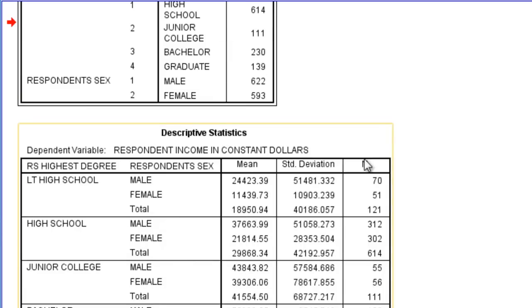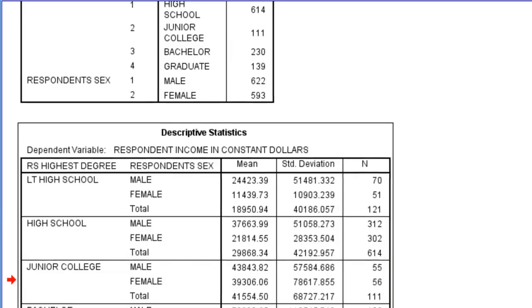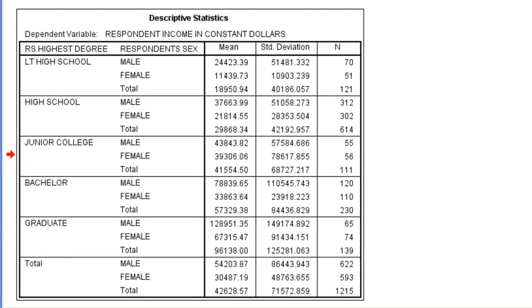My next table, because I clicked on the option of Descriptive Statistics, this gives me the mean and standard deviations and sample sizes for each of those cells. For the 10 mean cells that I'm comparing, I also get total values as well. So all my marginal totals in this table.